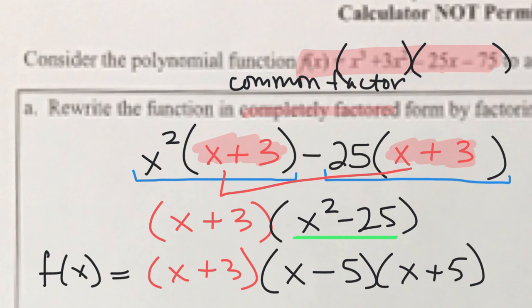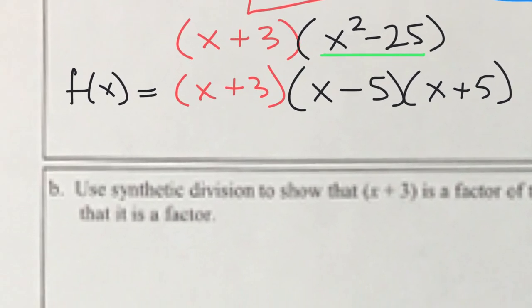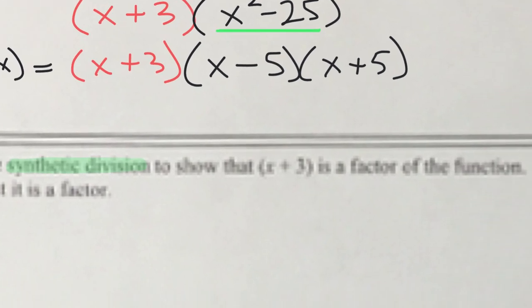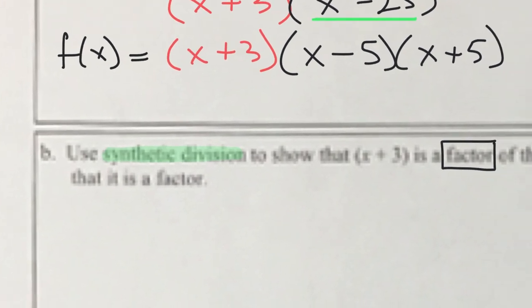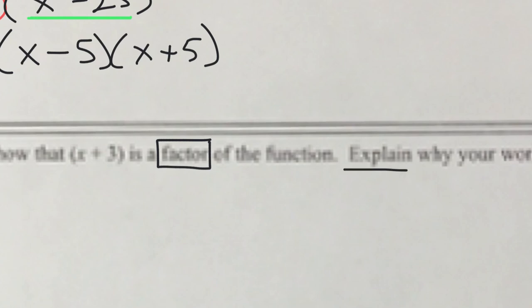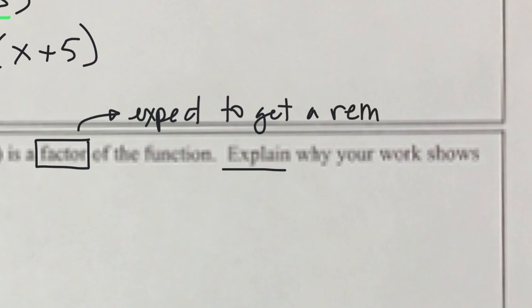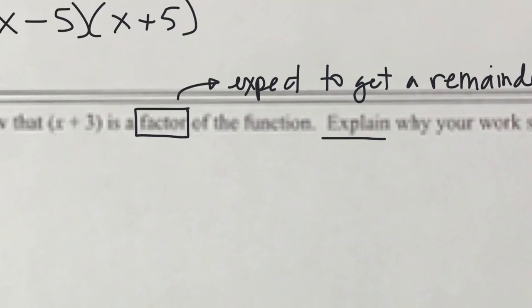Moving on to Part B: it says use synthetic division to show that x plus 3 is a factor of the function, and then explain why. If we use synthetic division and our thing is a factor, what do we expect? We expect to get a remainder of 0. That is our conceptual understanding: if it is a factor, we will have a remainder of 0.